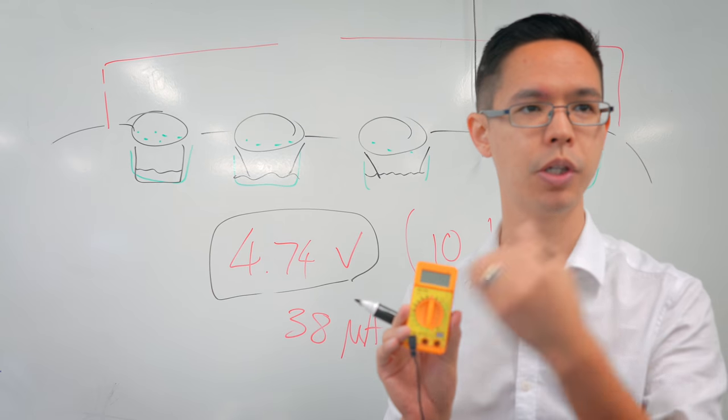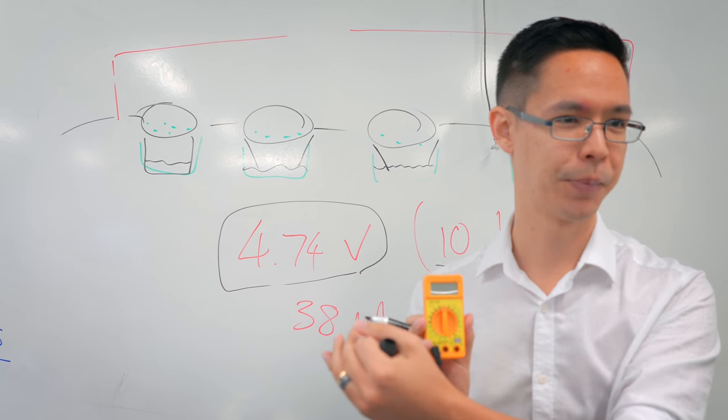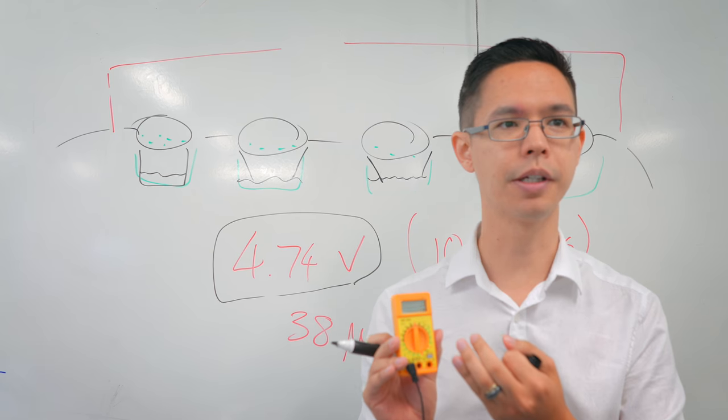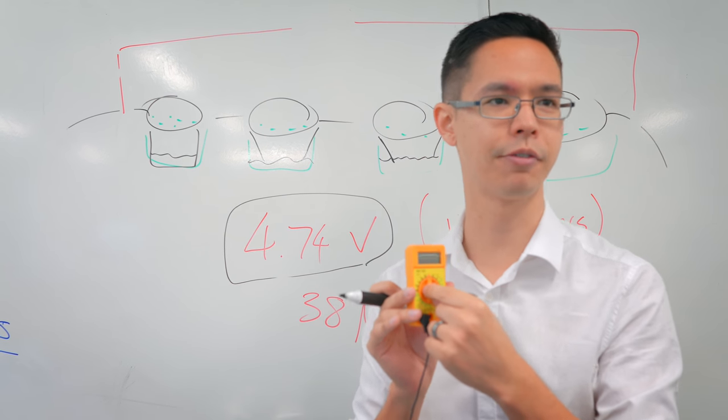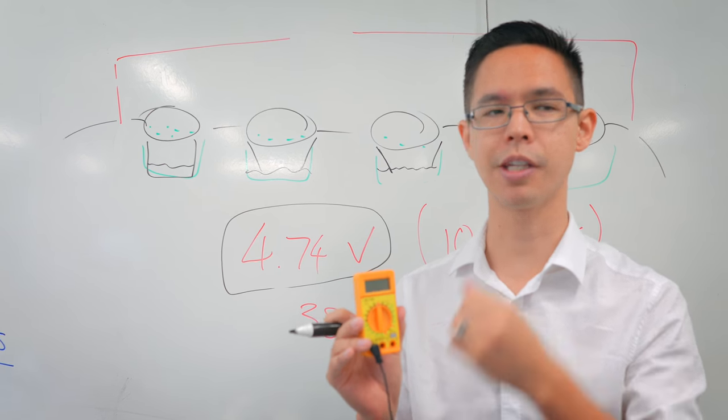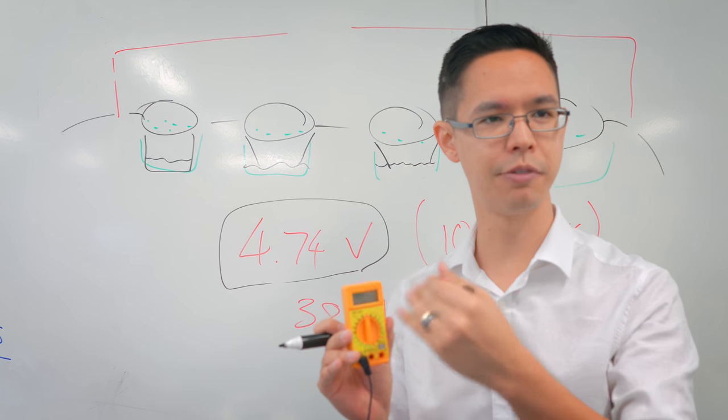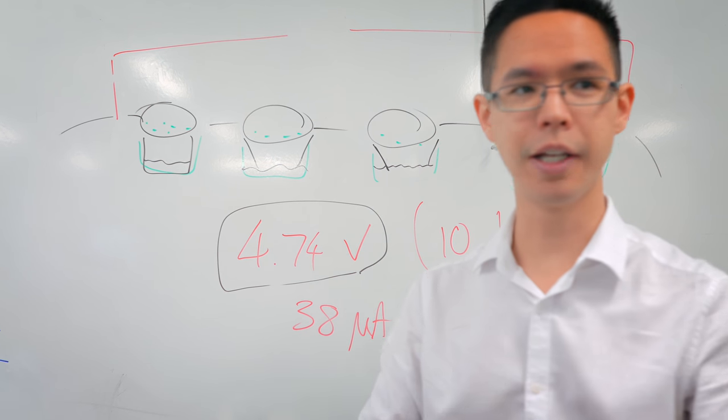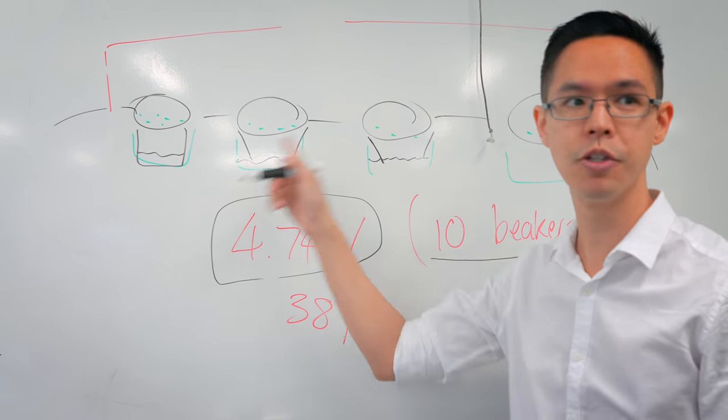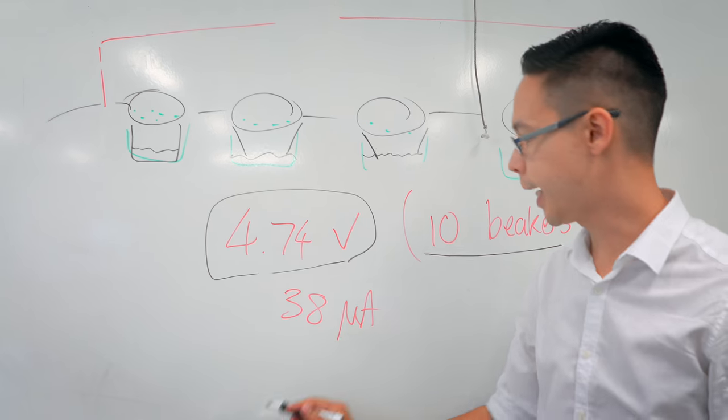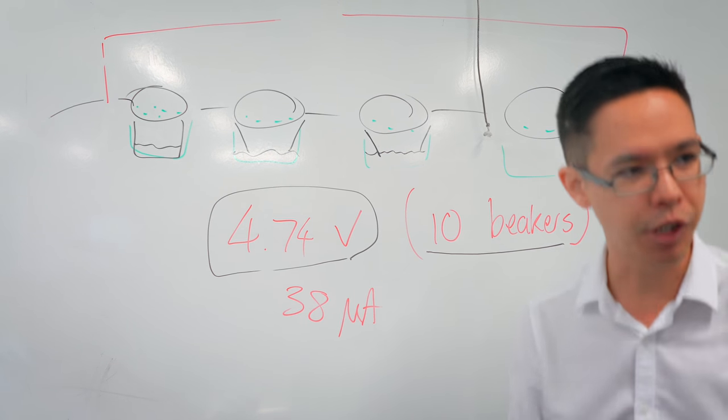When we had on the multimeter, we got zero, zero, zero. So either something's not working in the circuit or the current is so tiny that it wasn't sensitive enough. So I readjusted the settings and went more sensitive, more sensitive, more sensitive. So we finally got a reading of how much current that chain of 10 beakers of lemon juice was able to create: 38 microamps.